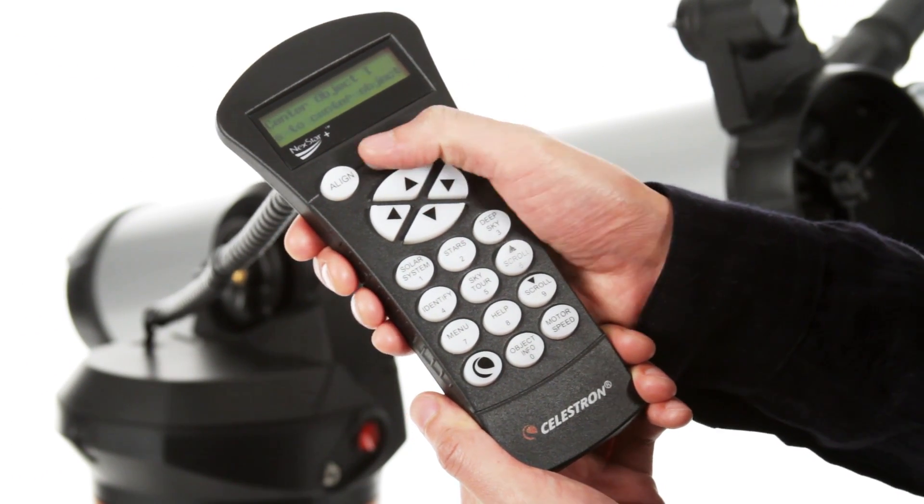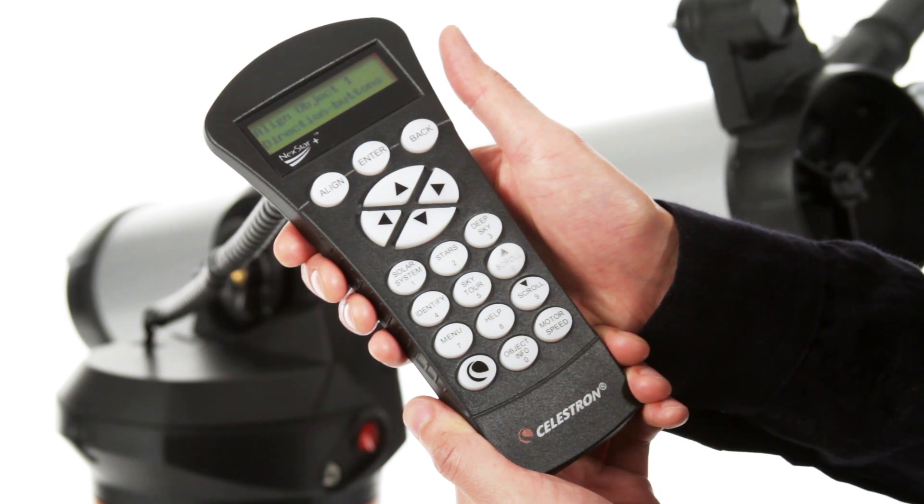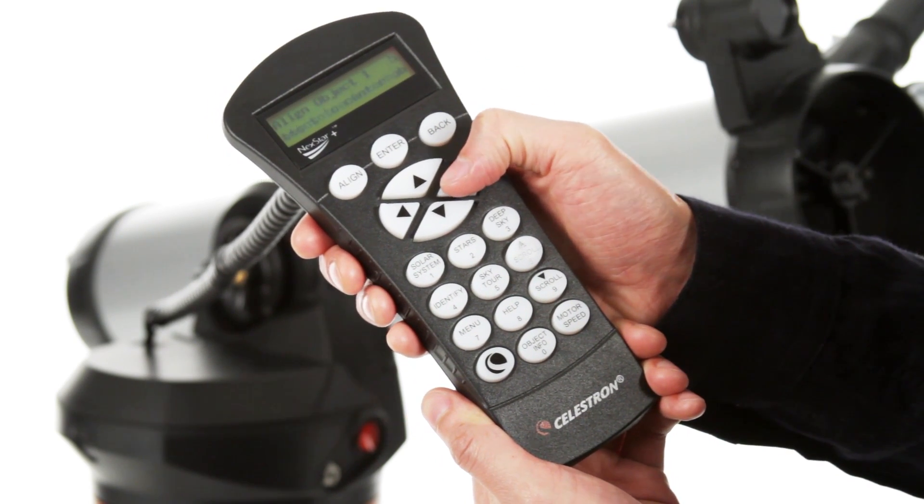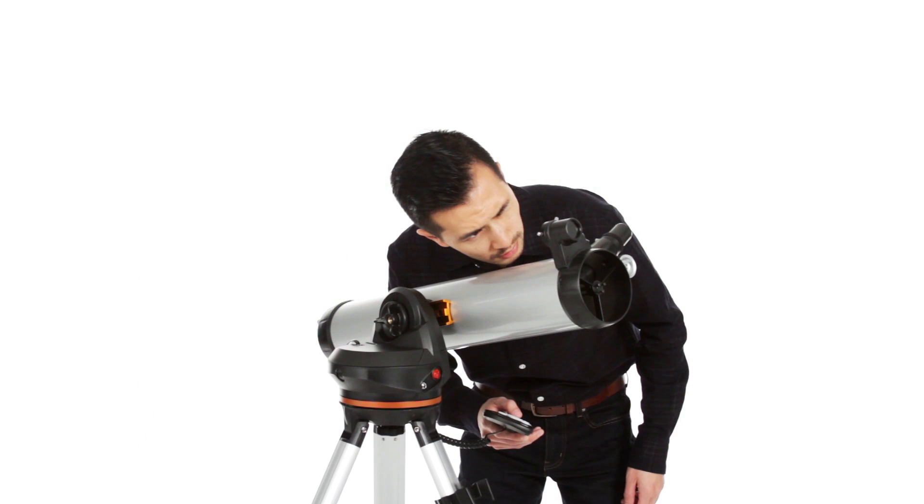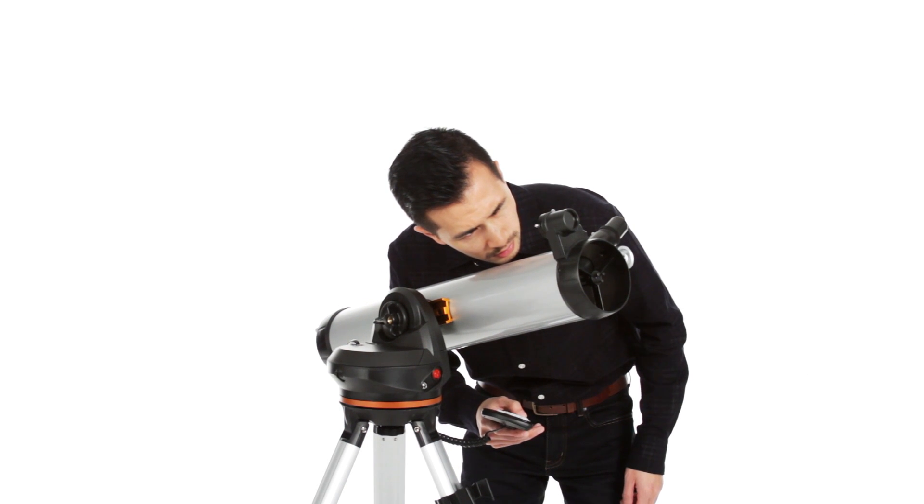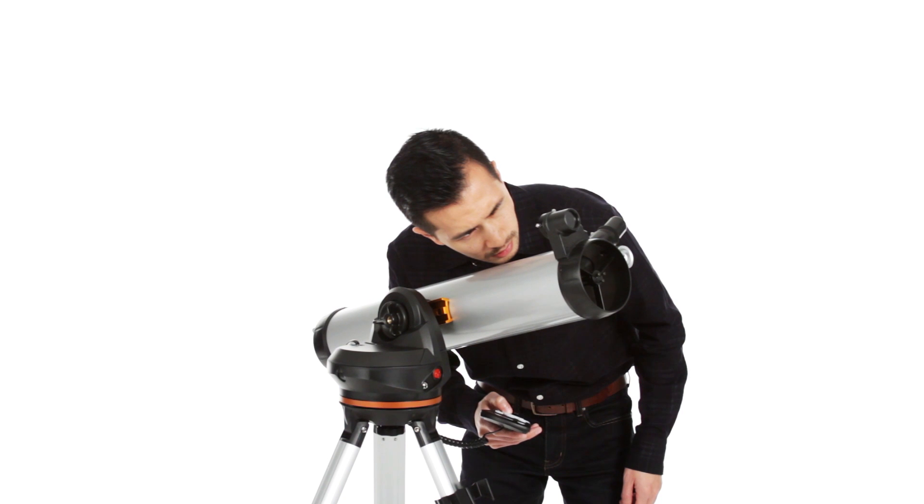Getting started is easy thanks to our proprietary SkyAlign procedure. Use the directional buttons to center any three celestial objects in the eyepiece, and your LCM is aligned and ready to locate and identify objects for you.